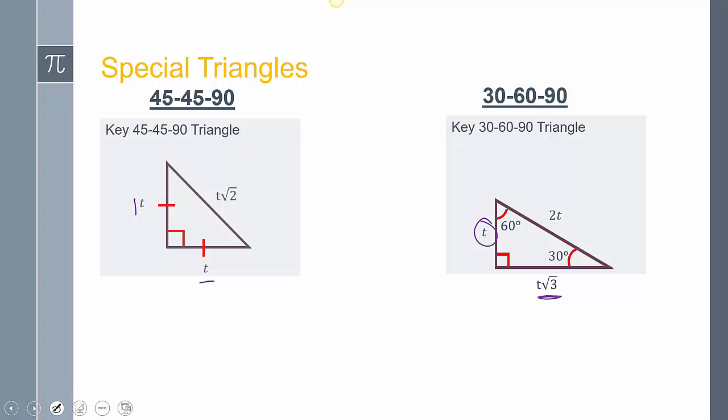So what we're going to do is if we have these two triangles memorized, all we need to do is then just compare the triangles to whatever the problem is and then we can use it almost as like a puzzle to figure out what those missing sides are.